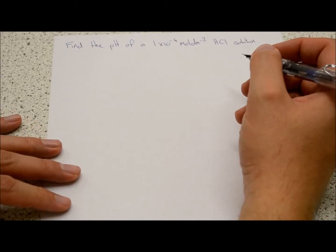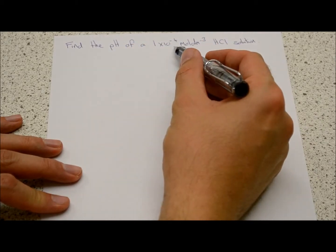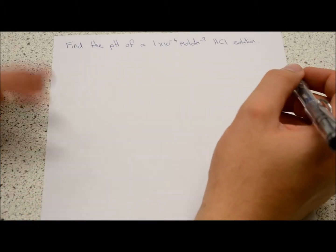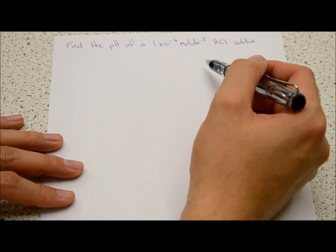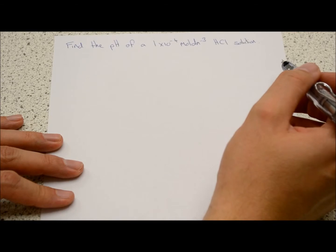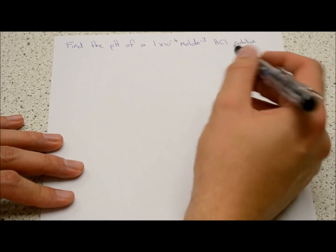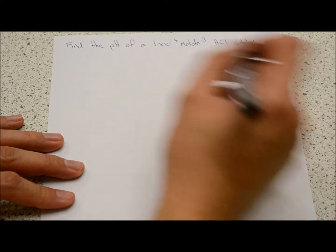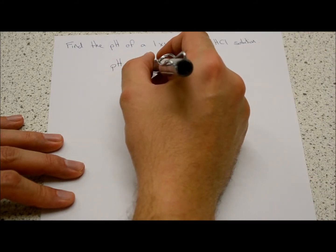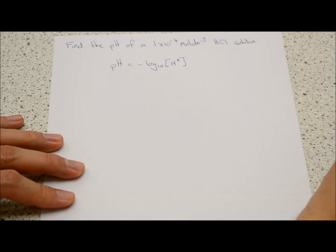Quick question on acids — starting off simply. Find the pH of a 1×10⁻⁴ mol/dm³ solution of hydrochloric acid. There's no dissociation constant given, and we know HCl is a strong acid, so all the H's form ions and all the Cl's form minus ions. We go straight to the formula: pH is equal to minus log base 10 of the hydrogen ion concentration.